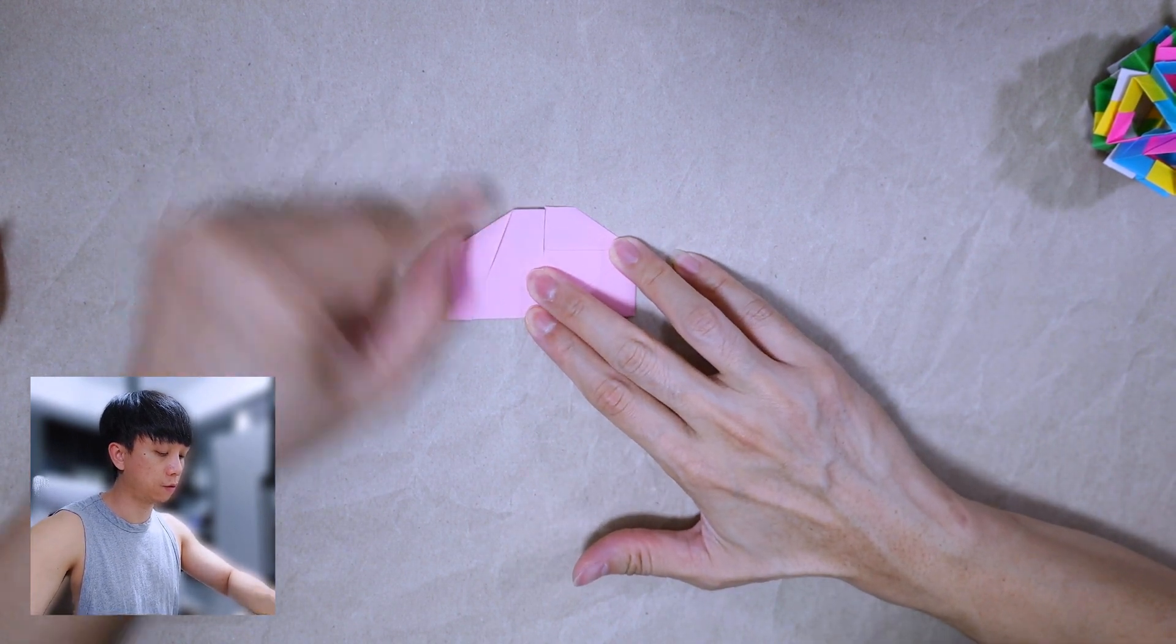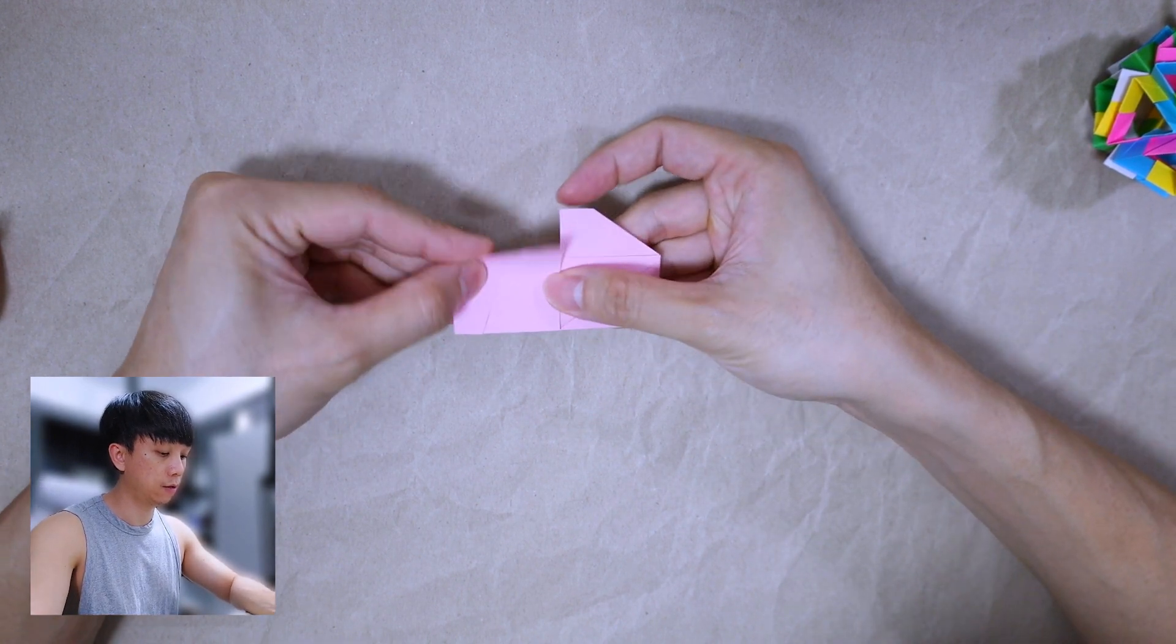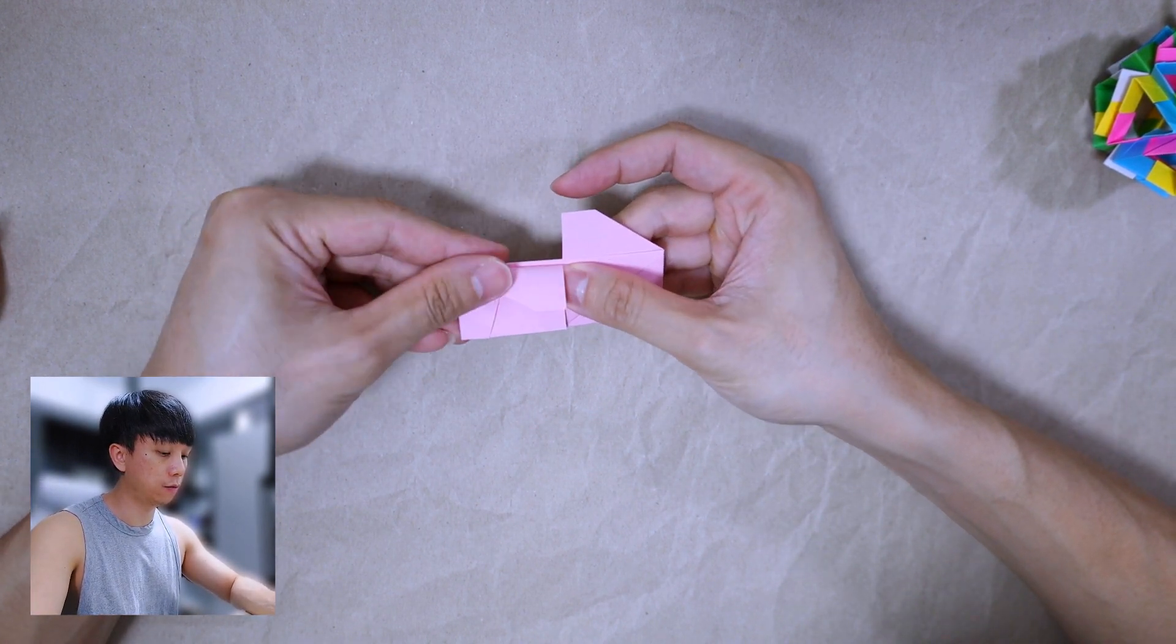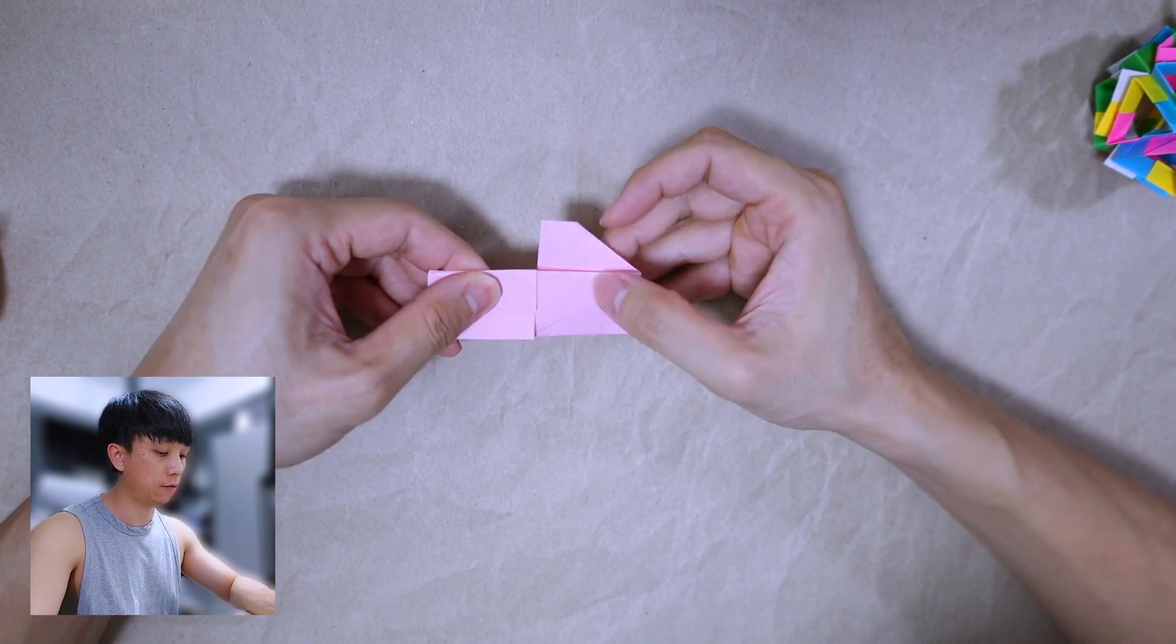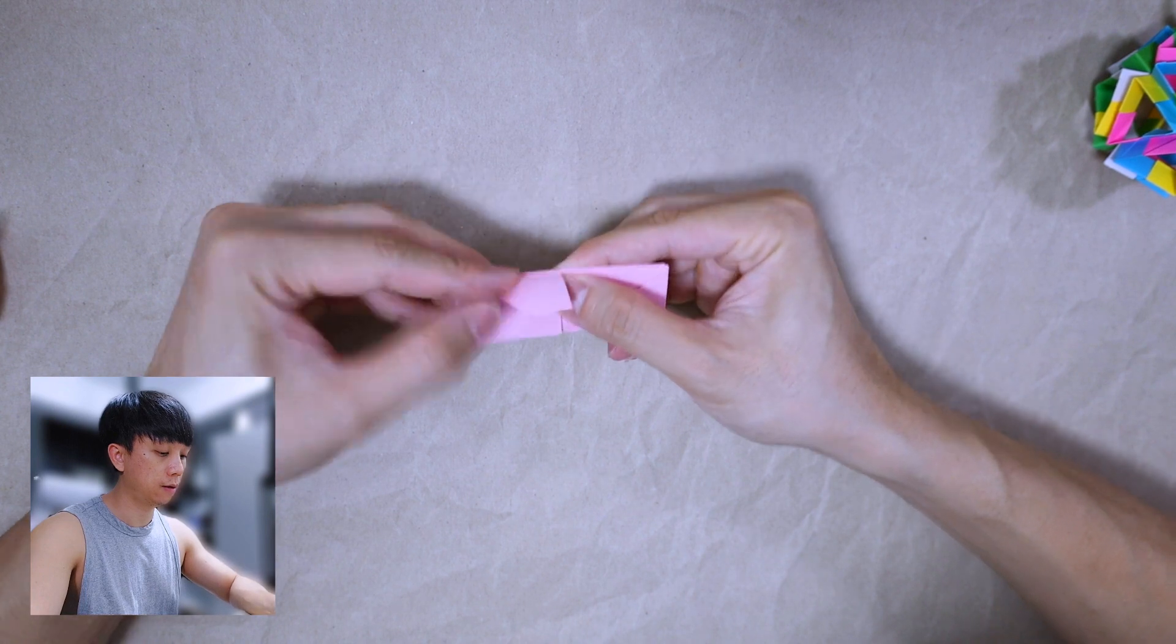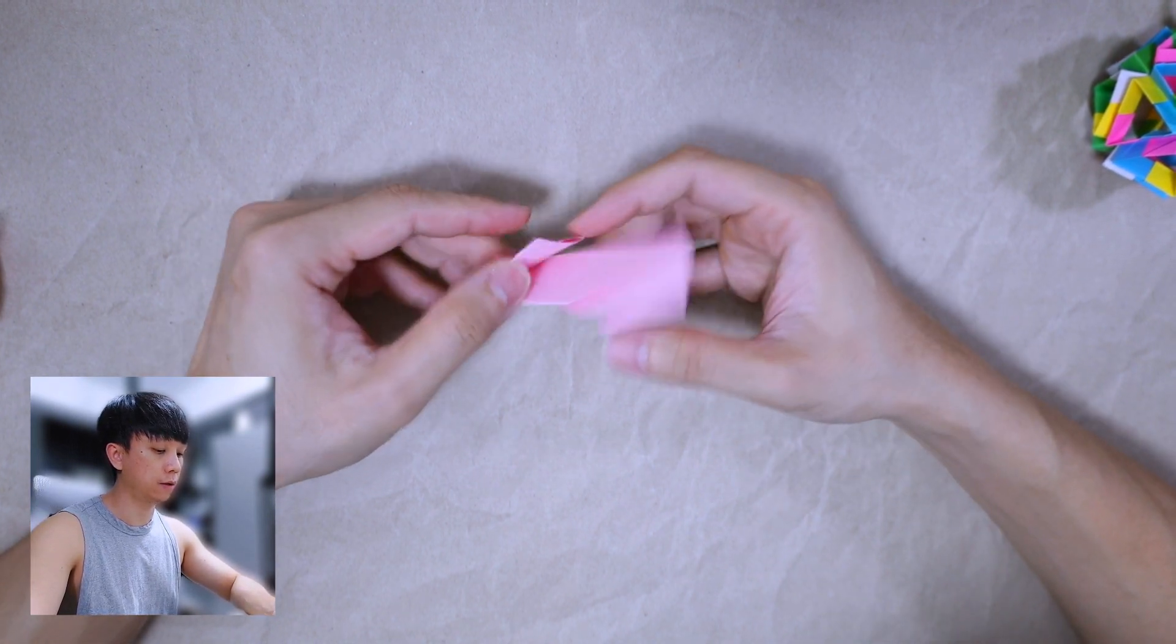This one should meet but just leave a small gap, and this one will fold down, fold down along the edge at the back. Repeat the same at the back, and we are done with the unit.